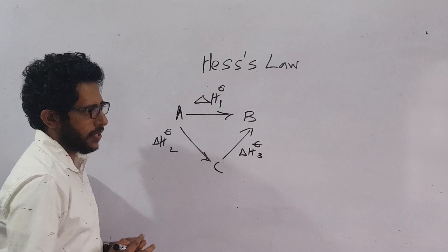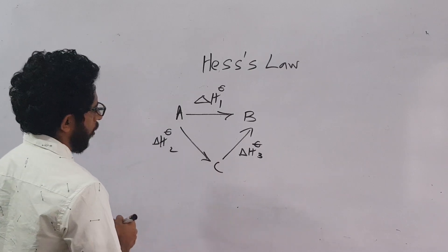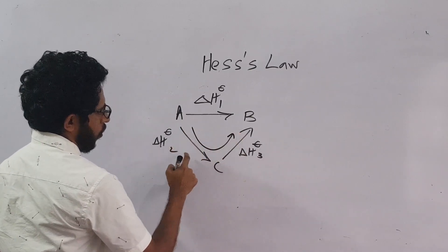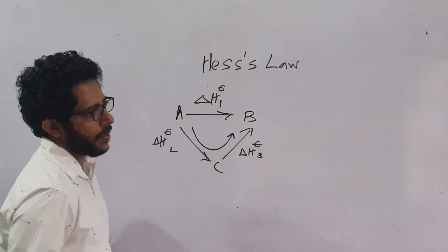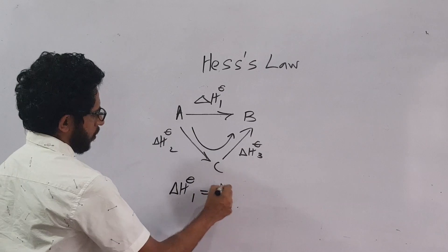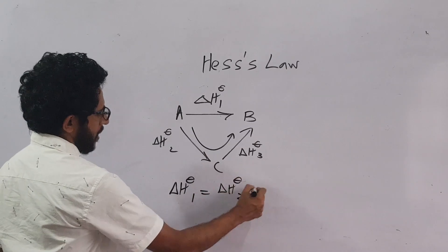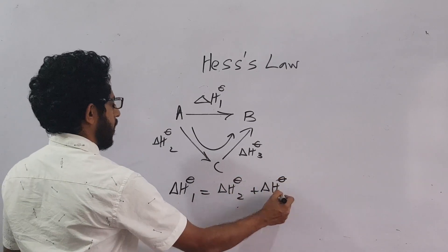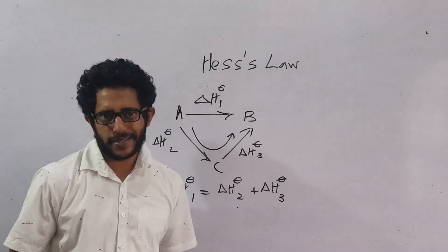Hess suggests that enthalpy change of 2 and 3 is equal to the enthalpy change of delta 1. So delta H standard 1 is equal to delta H standard 2 plus delta H standard 3. That is what Hess has suggested.